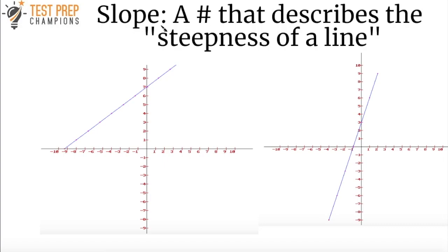For many test takers, the word slope can be a source of confusion. So what do we mean by slope? Well there's a very simple way to think about the concept. The slope is just a number and it's a number that describes the steepness of a line. You could think about the slope as the steepness of a line.